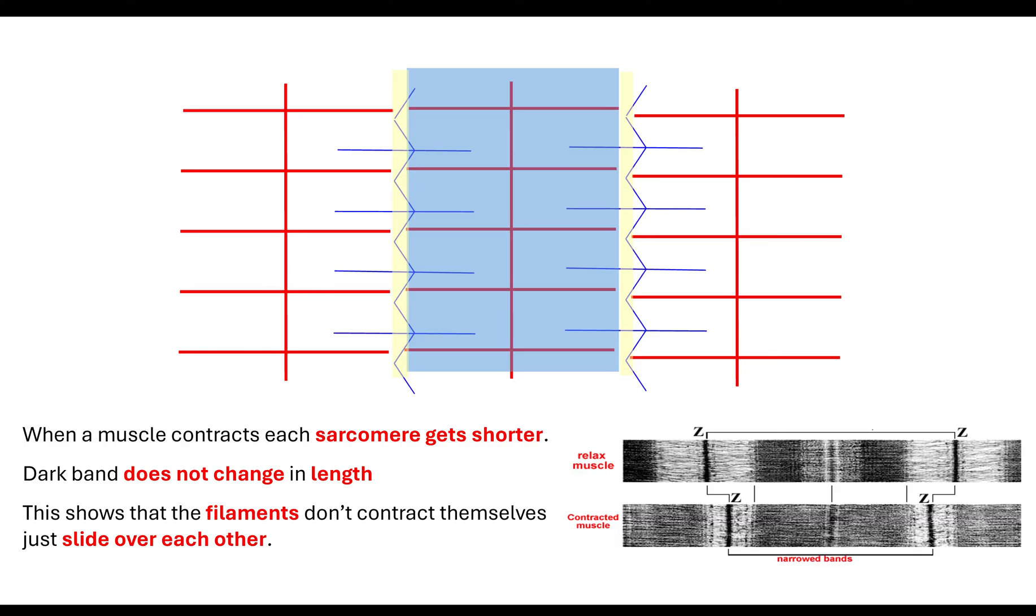We say that the filaments are sliding over each other, and therefore our light band has got shorter, but our dark band doesn't change shape.